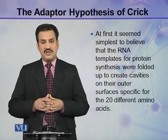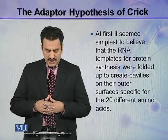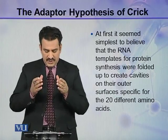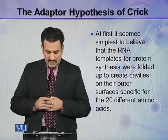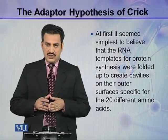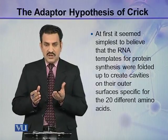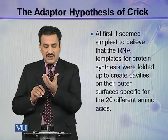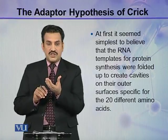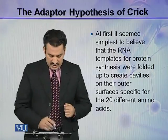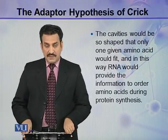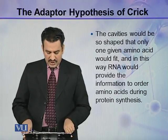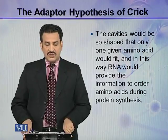While explaining the central dogma, at first it seemed simplest to believe that RNA templates for protein synthesis were folded up to create cavities on their outer surfaces which are specific for 20 different amino acids. It was speculated that on RNA molecules synthesized from DNA, there are some cavities present — 20 different types of cavities for 20 different types of amino acids. The cavities would be so shaped that only one given amino acid would fit, and in this way RNA would provide the information to order amino acids for the synthesis of protein.